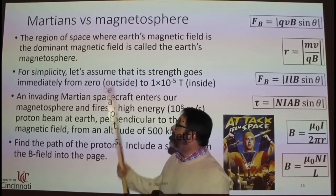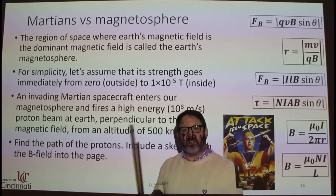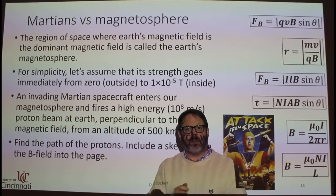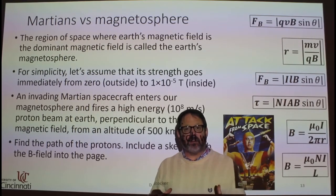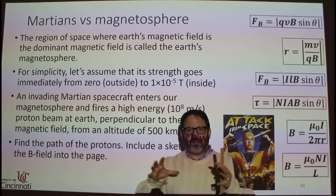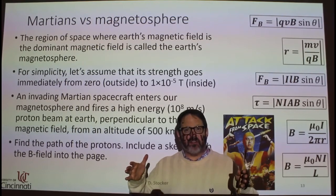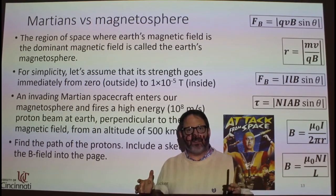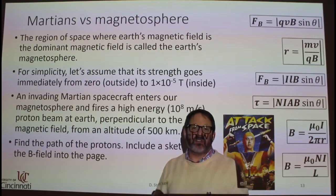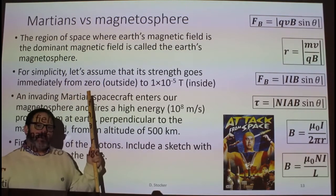In this case, we're looking at the magnetic field of the Earth. The Earth has its own magnetic field that it generates, and this creates a magnetic field near the Earth. In the area where the Earth's magnetic field is dominant, that's called the Earth's magnetosphere.